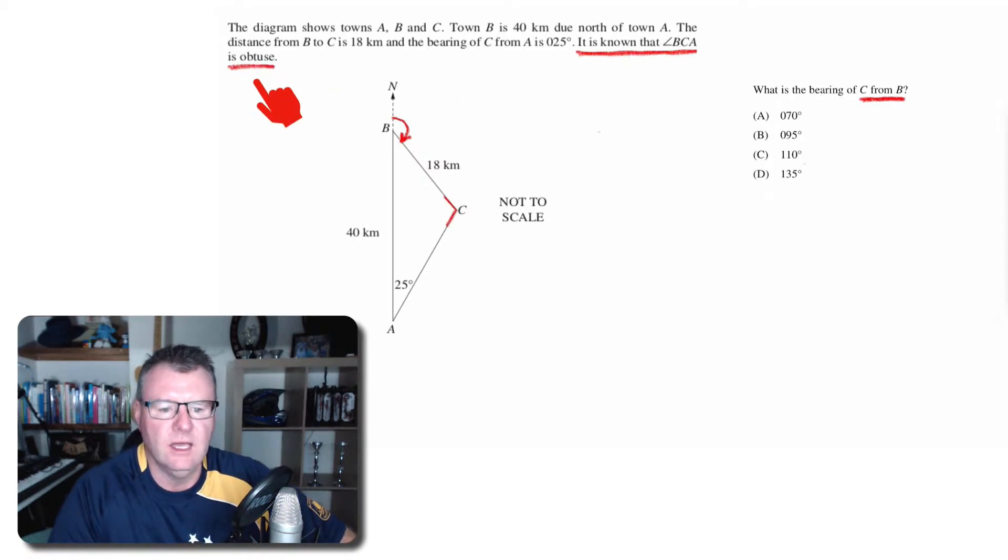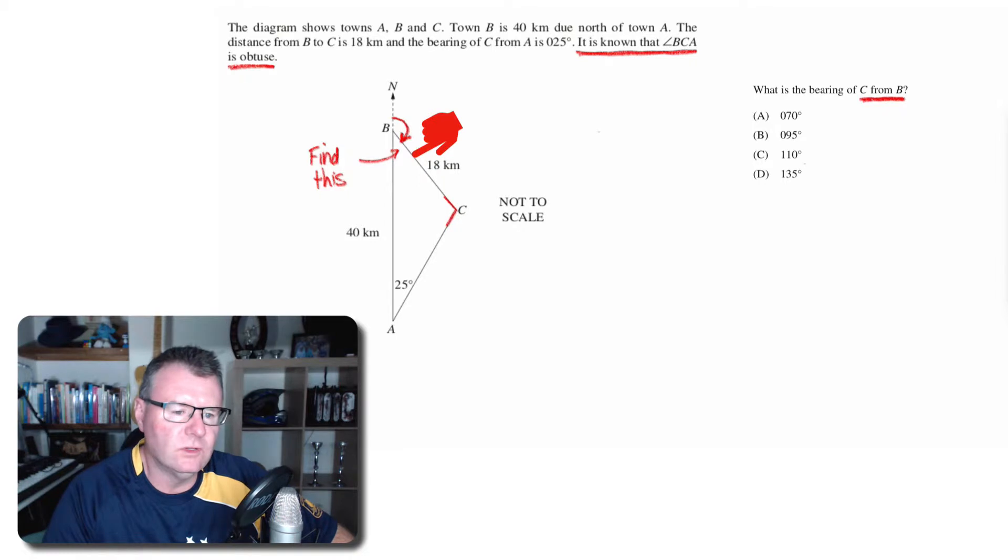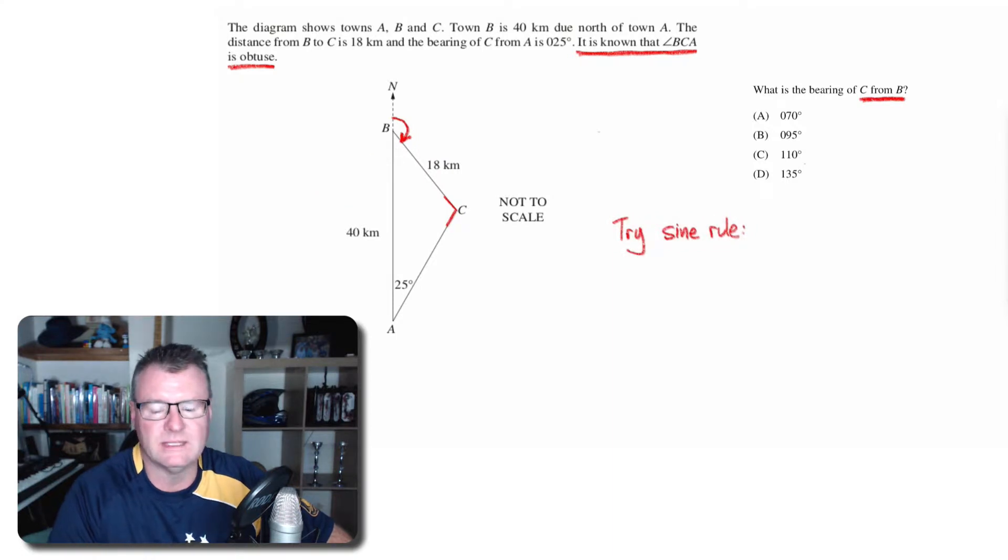Okay, first of all, if I can find out what this angle is, then I can take it away from 180 to get the bearing that we need. But to find that angle, I first need to find the angle BCA, and I'm going to try and use the sine rule to do that: a over sin A equals b over sin B.